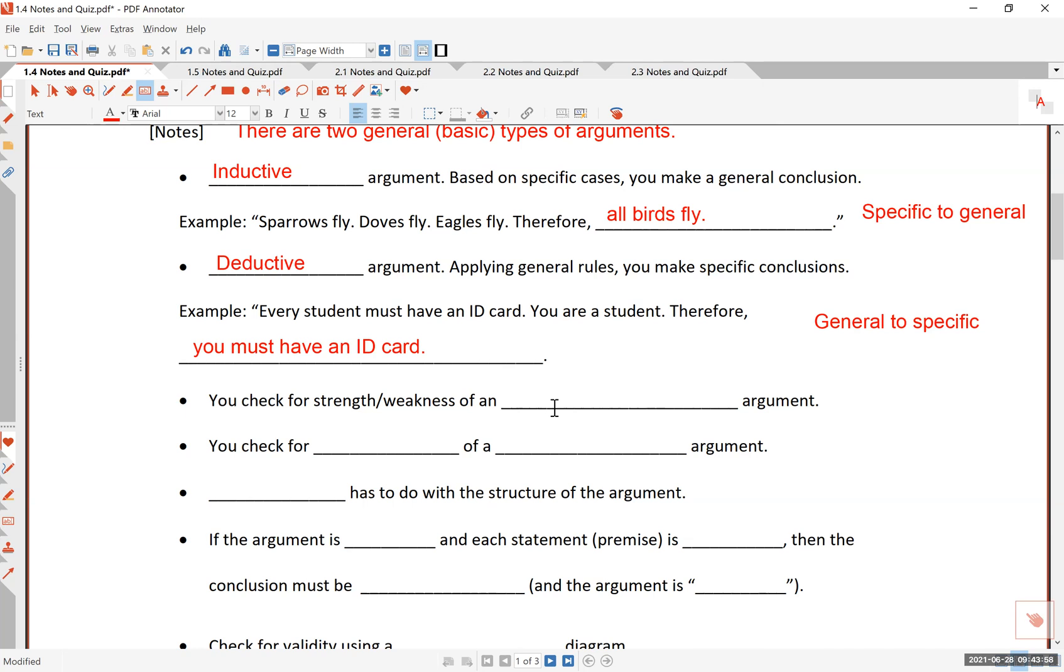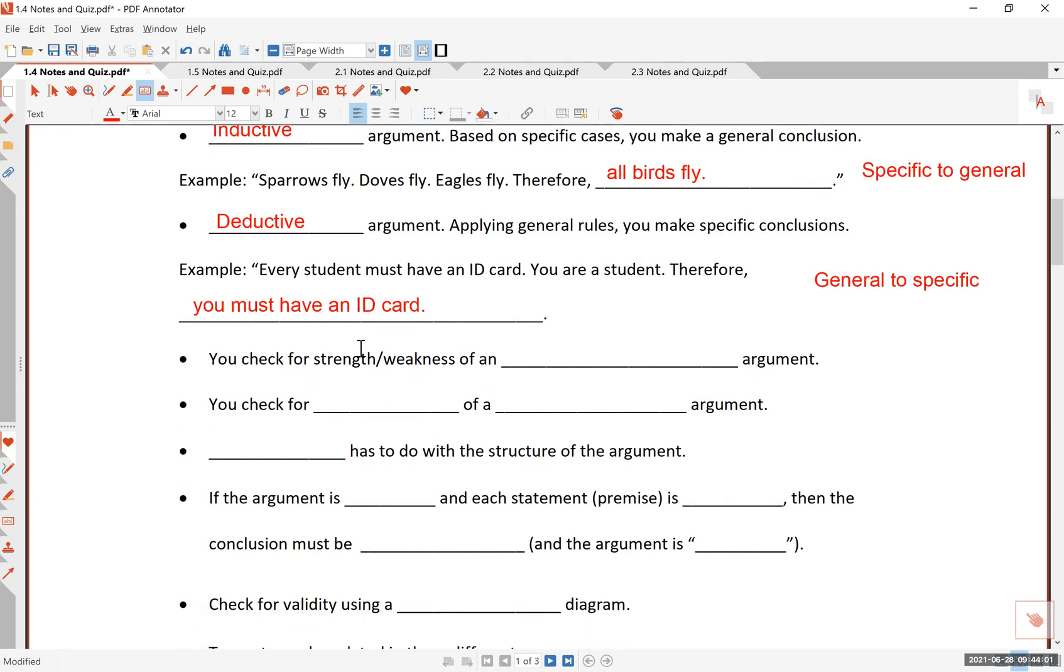Now, before we go on, let me just say something here about the argument types and what we are to do with them. You check for the strength and the weakness of an inductive argument. So an inductive argument is not something that we test for validity. However, we check for validity of a deductive argument. So what we are checking is different depending on what kind of argument we are looking at.